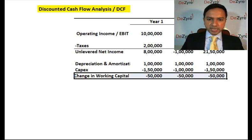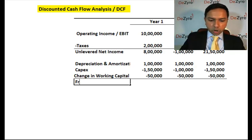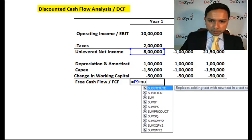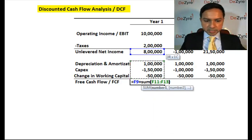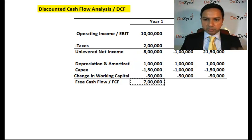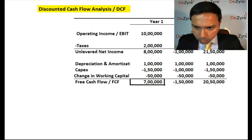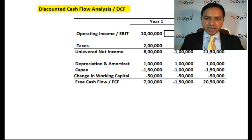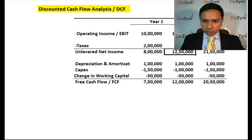That brings us to what is called the free cash flow (FCF). Free cash flow is: unlevered net income, plus depreciation and amortization, minus CapEx, minus change in working capital. Doing this calculation, we get 7 lakhs of free cash flow in year one, 12 lakhs in year two, and 20 lakhs in year three. Even though your operating income is higher, the actual cash left over after all cash expenses is that free cash flow number.